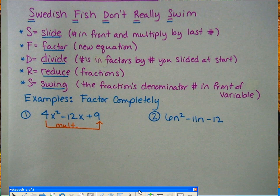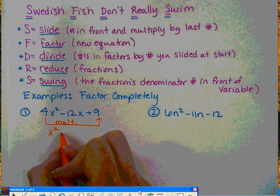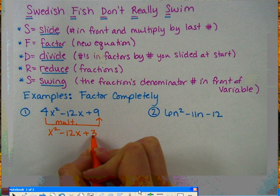So we take the front number and we slide and multiply it by the last number. So when you do that, you now have the new equation, x² - 12x and then 9 times 4 is 36, so plus 36.